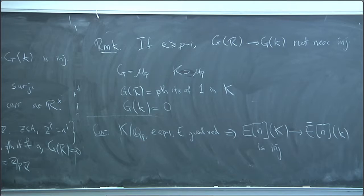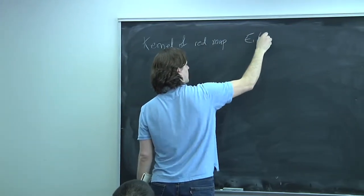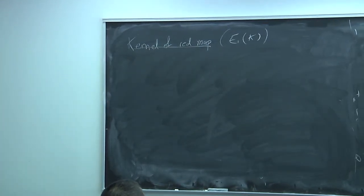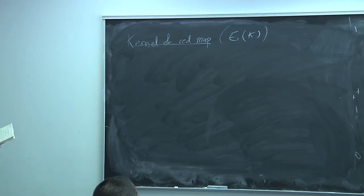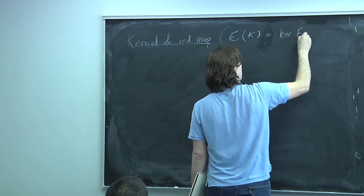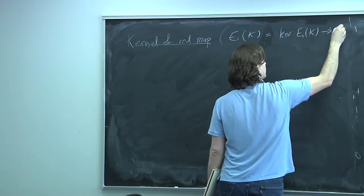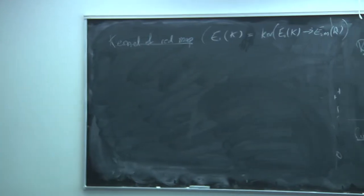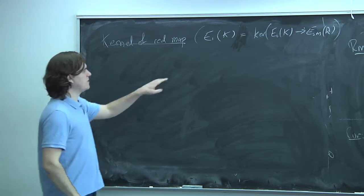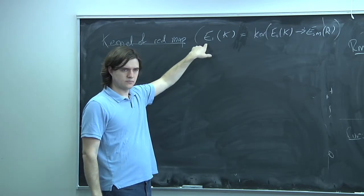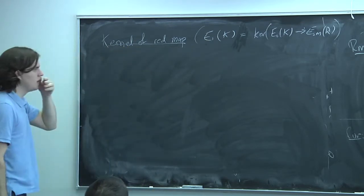Now I want to talk about the kernel of the reduction map, E₁. I want to tell you what the structure of this is. These are the points in E₀ that reduce to the identity point downstairs — i.e., points that are p-adically close to the identity. To study this, it makes sense to change coordinates so that the identity point is at the origin.